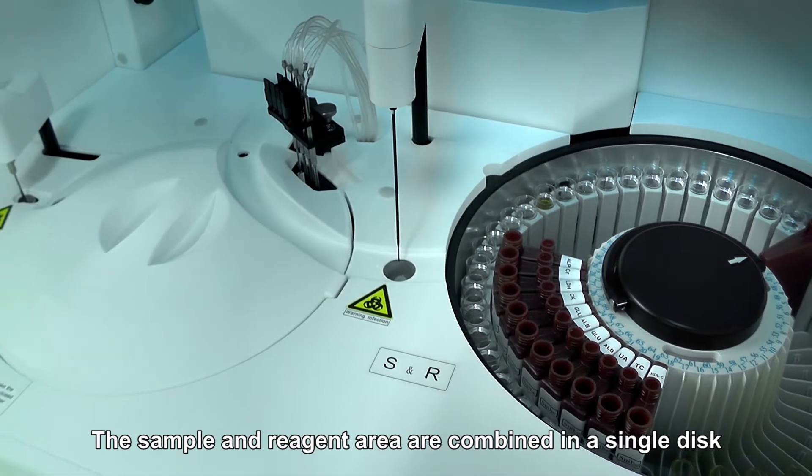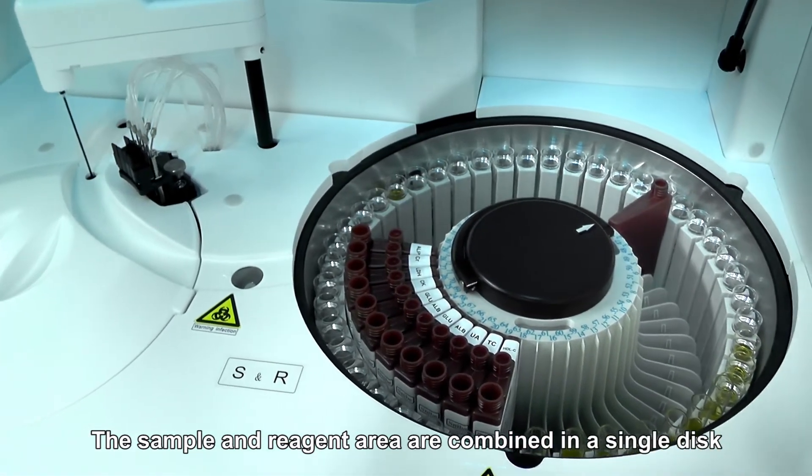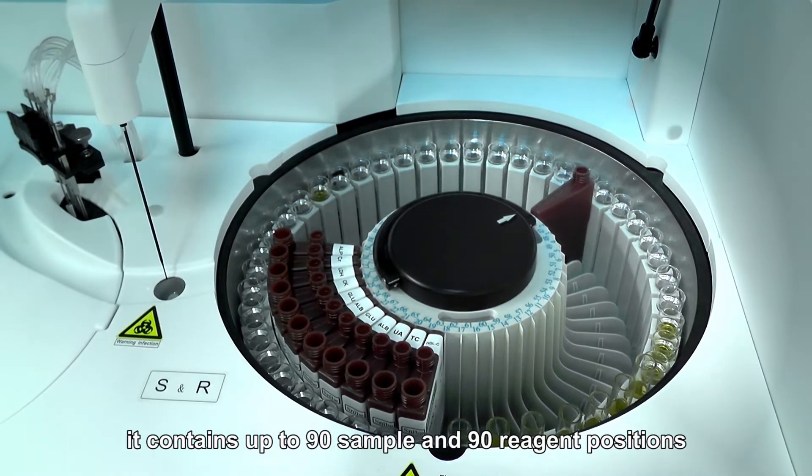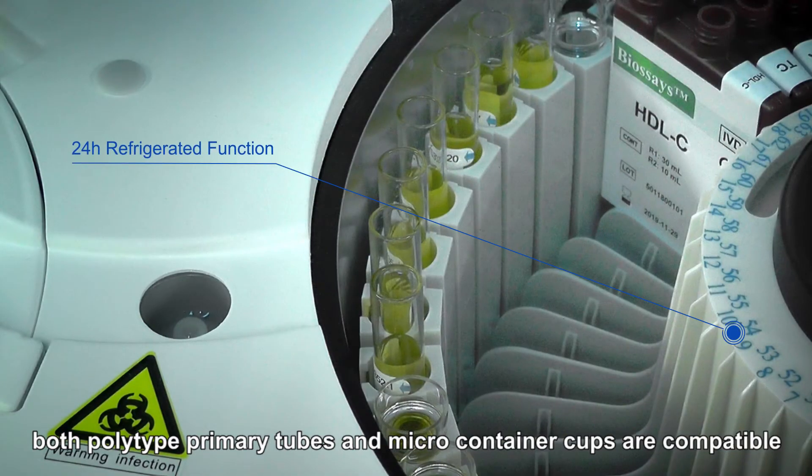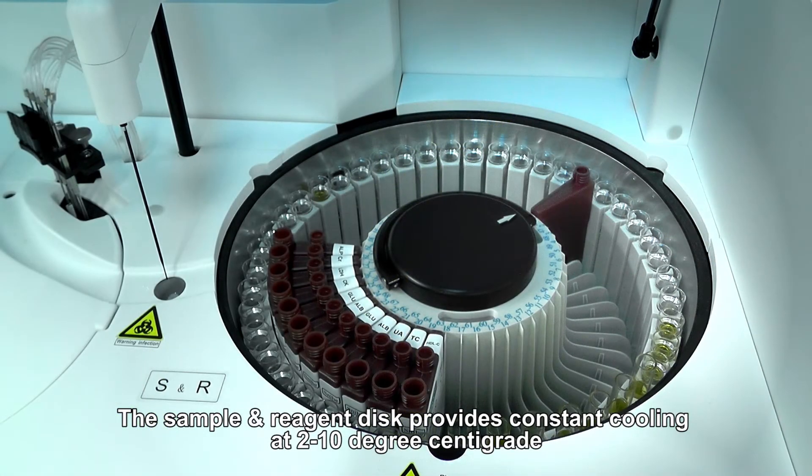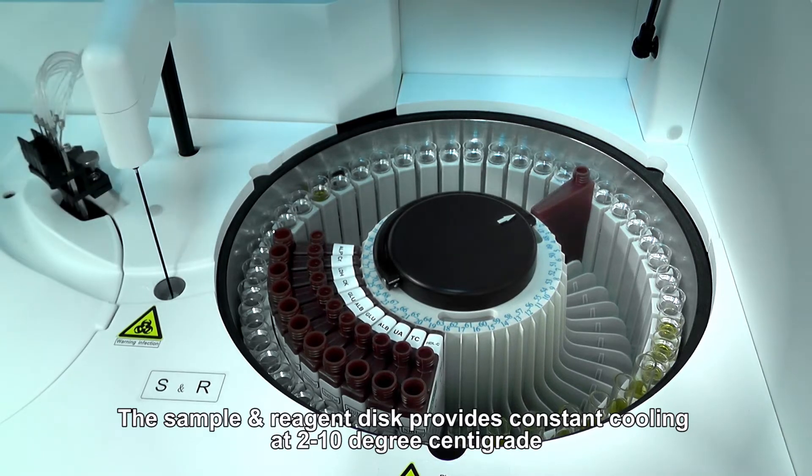The sample and reagent area are combined in a single disk. It contains up to 90 sample and 90 reagent positions. Both polytype primary tubes and microcontainer cups are compatible. The sample and reagent disk provides constant cooling at 2 to 10 degrees centigrade.